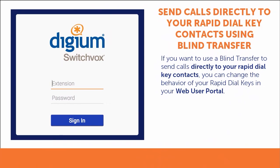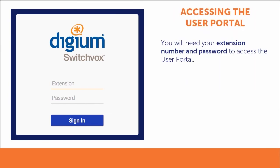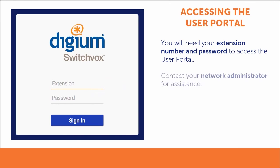If you want to use a blind transfer to send calls directly to your rapid dial key contacts, you can change the behavior of your rapid dial keys in your web user portal. To access the user portal, you will need your extension number and password. If you do not have this information, please contact your network administrator for assistance.